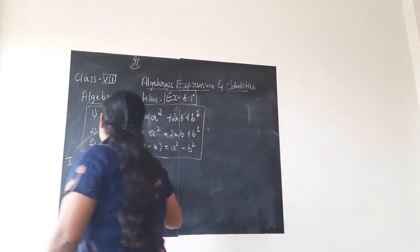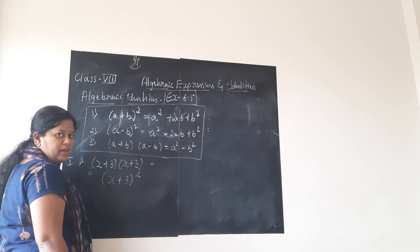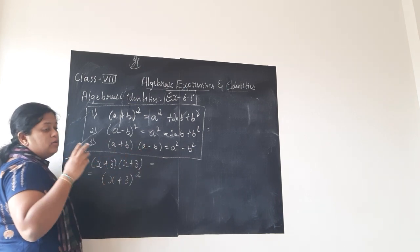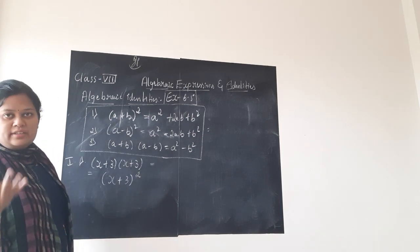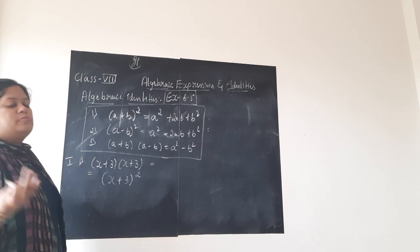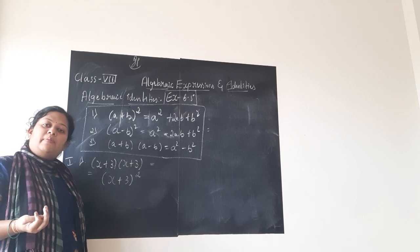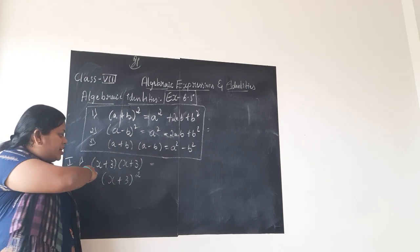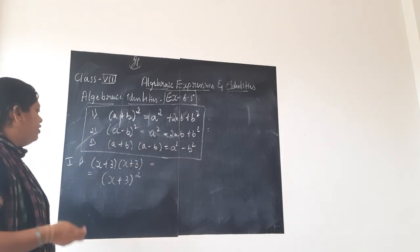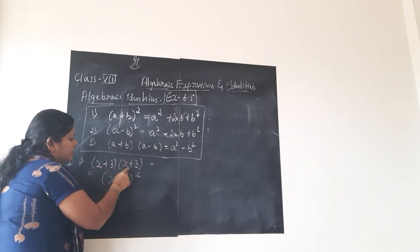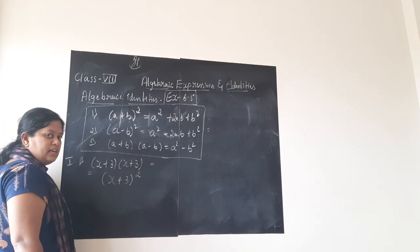So x plus 3 into x plus 3 can directly be written as x plus 3 whole square. If a minus sign were there, it would be of the form a plus b into a minus b — that is different. By looking at the problem, you should analyze which identity to apply. Since the same terms are there in both brackets, it is x plus 3 whole square.